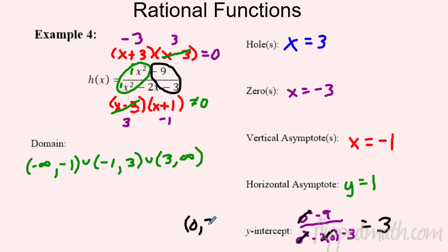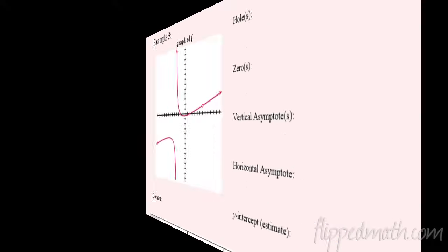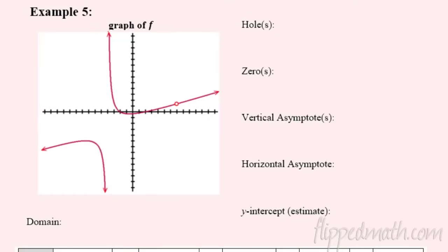For the y-intercept, plug in x = 0: you get (0 - 9) / (0 - 0 - 3), which is -9 / -3 = 3. The y-intercept is 3 — or as a point, (0, 3). If you can do all of that, you're going to crush this. Just be careful that holes don't fall on the zero.